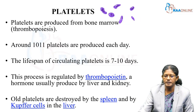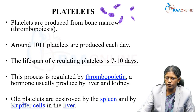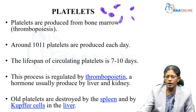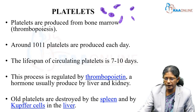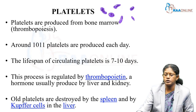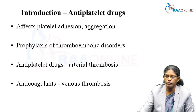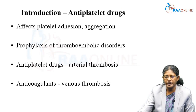Regarding platelets generally: the lifespan of platelets is about 7 to 10 days; they are produced by the bone marrow, a process regulated by thrombopoietin, a hormone. Old platelets are destroyed by the spleen and by cells of the liver.